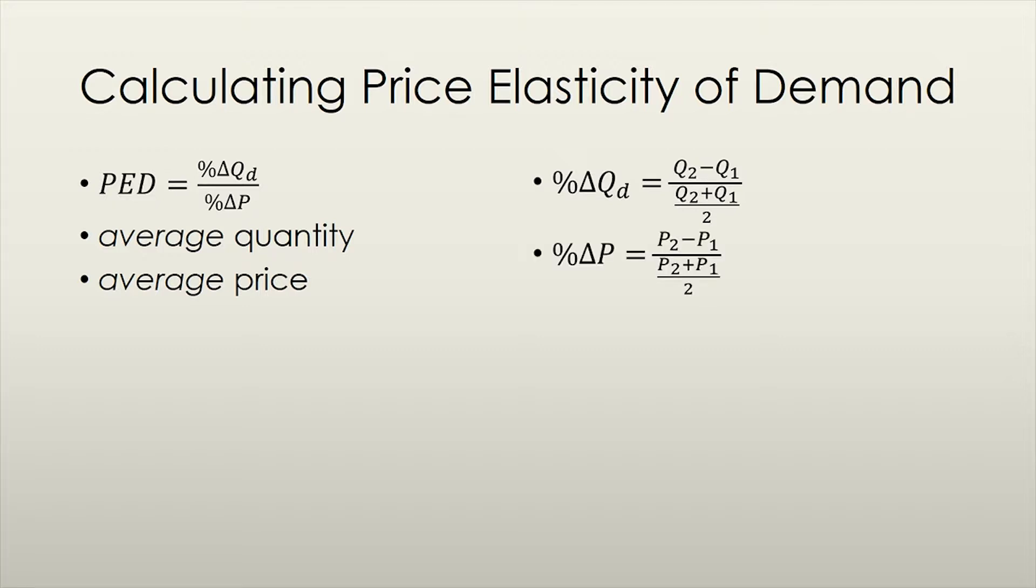We'll perform a similar calculation for the change in price: P2 minus P1 over the average price. We then divide the answer we got in the first part by the answer we got in the second part, and we can get an answer for the price elasticity of demand.